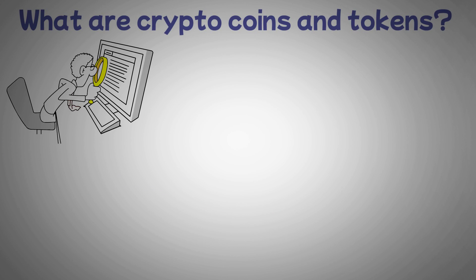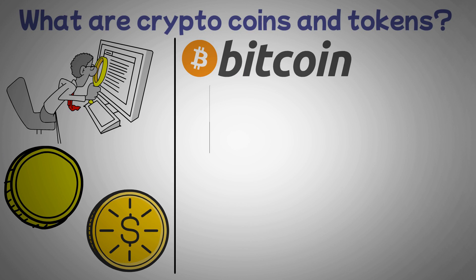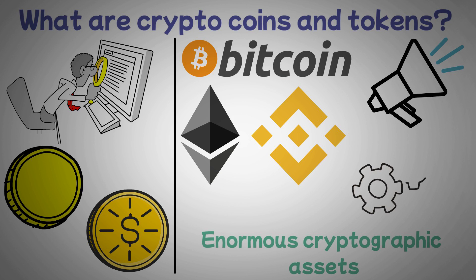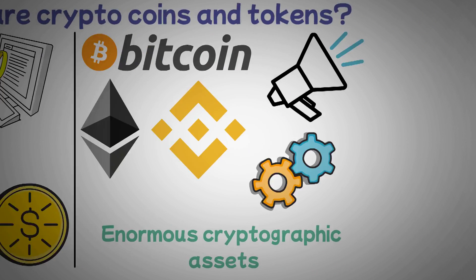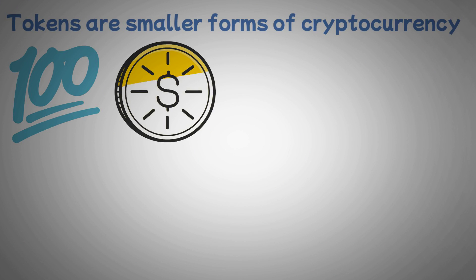What are crypto coins and tokens? To begin with, we must first determine the exact nature of these two assets in order to properly compare them. Bitcoin, Ethereum, and the Binance coin are a few of the most well-known examples of cryptocurrency coins. In other words, they are widely used cryptographic assets that serve a variety of purposes. On the other hand, tokens are smaller forms of cryptocurrency that typically have far more specialized uses than coins.